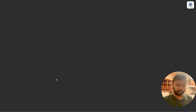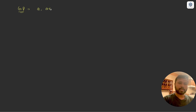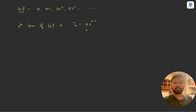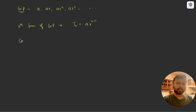Let's discuss some important formulas you need to know in order to solve questions related to geometric progression. First of all, the general form of a GP is: a, ar, ar², ar³, and so on — where a is the first term and r is the common ratio. If you want to calculate the nth term of a GP, that is given by tₙ = a·rⁿ⁻¹, where a is the first term, r is the common ratio, and n is the term number you want to find.